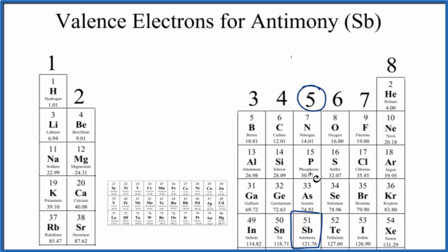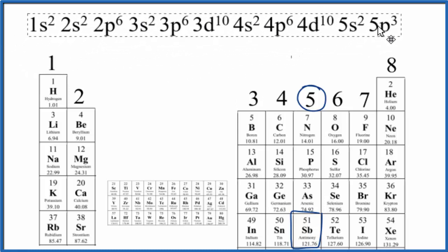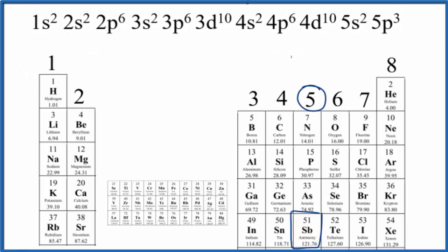So we know that antimony should have five valence electrons, but we can also check the electron configuration for antimony. So when we look at the configuration, we're looking for the highest energy level. That's the fifth energy level here.